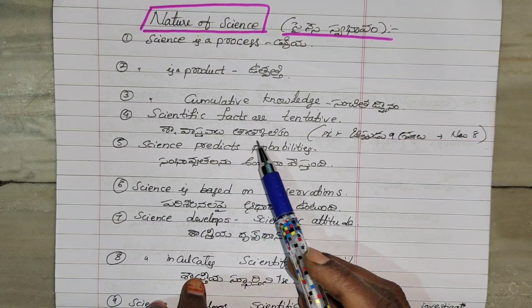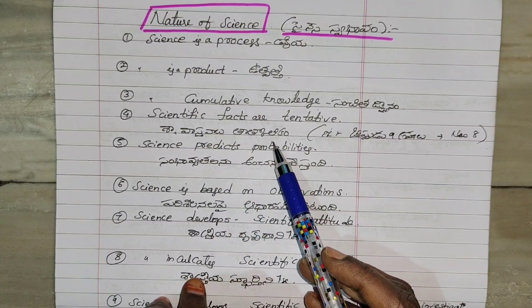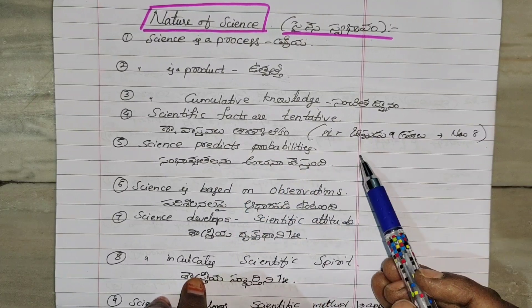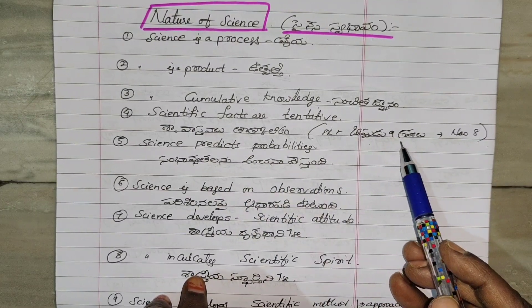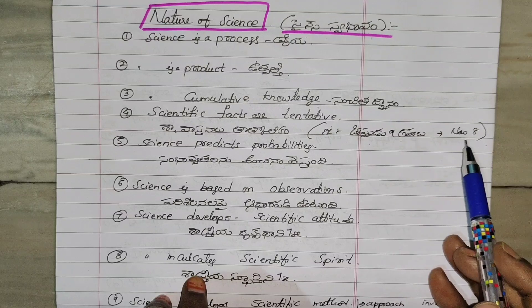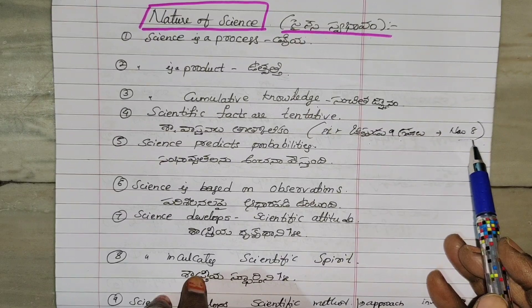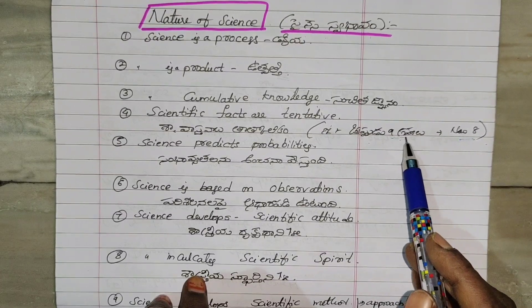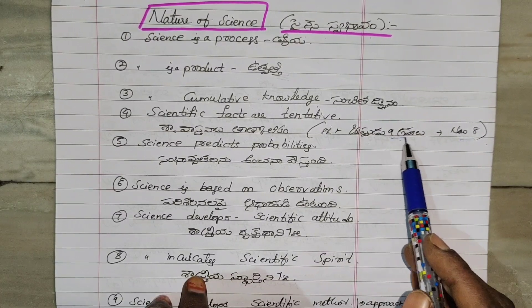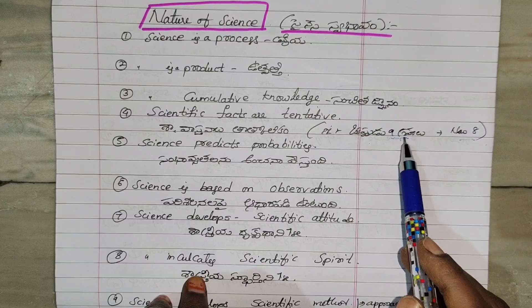Shastriya vashthavala nevi thathkalikam — scientific facts are tentative. If you have sunupika, you can see that a column is the headway.